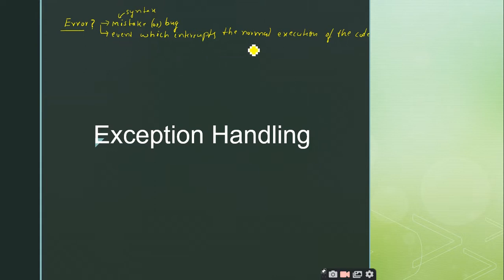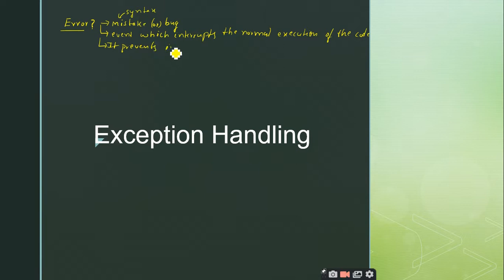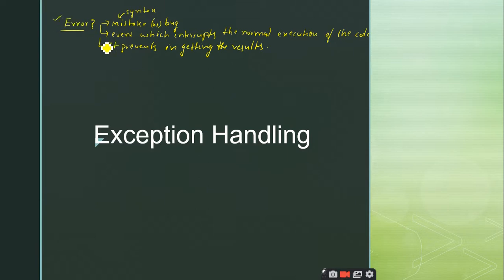It is a situation which interrupts the normal execution of the code and which prevents you from getting the result. The user is expecting some result and won't be getting it because of these errors. So an error is a situation which interrupts the normal execution of the code and prevents you from getting the results. This is the first basic topic you should know.